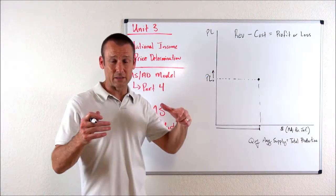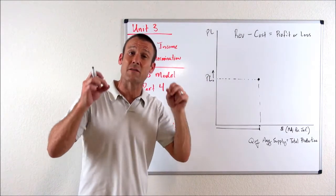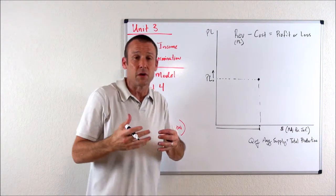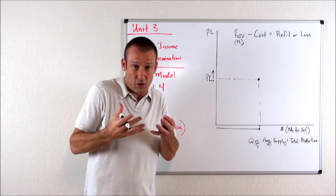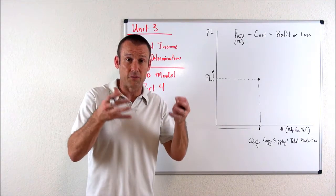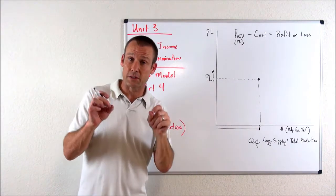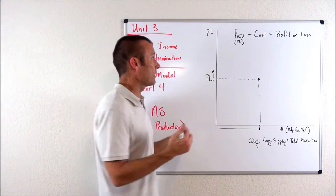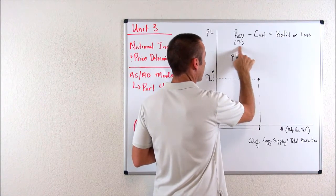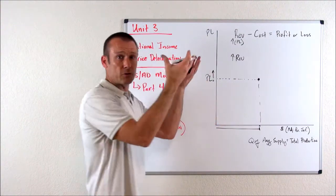When we think about the price level — the price of final goods and services — we should associate that with revenue. These are prices of the goods and services businesses are selling. When I think of my revenues as a business, they're determined by the prices of the goods and services I sell. So when the price level goes up, ceteris paribus, what happens to revenues? Revenues are absolutely going to go up.